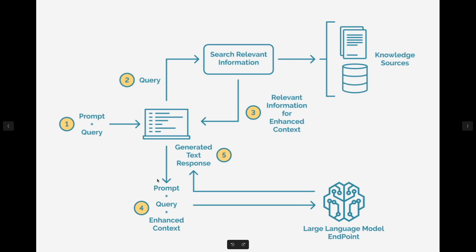In a RAG system, this works by retrieving relevant documents before generating an answer. You have a prompt, and then the RAG system retrieves similar documents to what you queried. Those retrieved documents are passed to the LLM to add more context to its response. It's similar to fine-tuning, except with fine-tuning you retrain the model itself on your data. With RAG, you don't train the model — you leave it as is and attach a knowledge base.